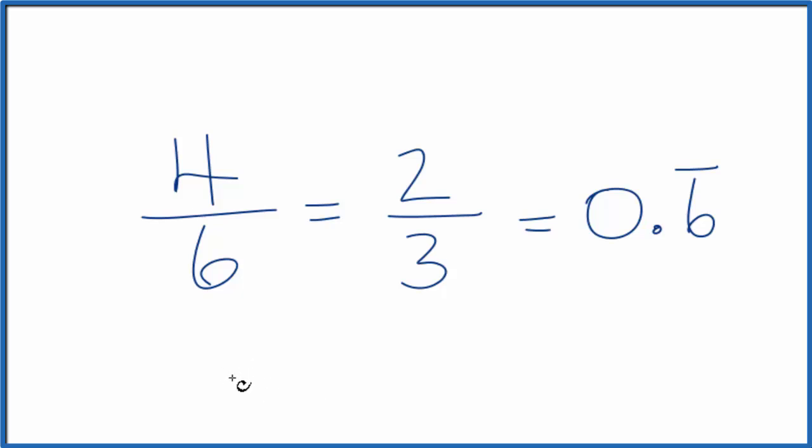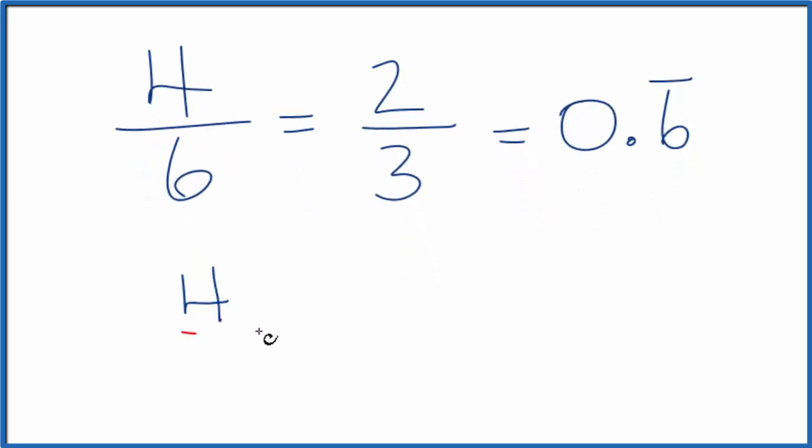Let's do another one. If we have four sixths here, if we multiply four sixths by one, that won't change the value. But instead of one, let's multiply it by two over two, because two over two, that's one, that's still one.